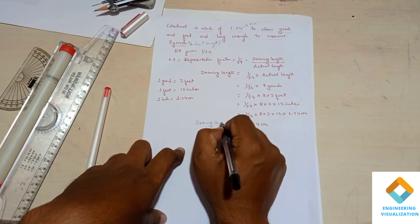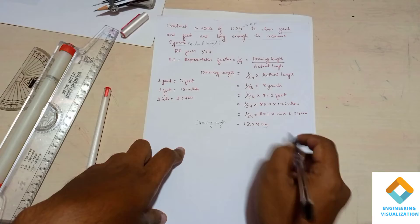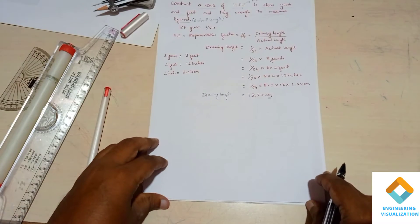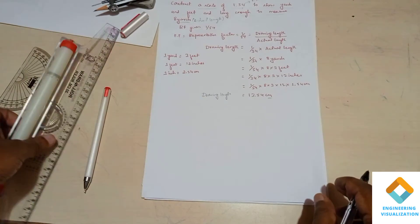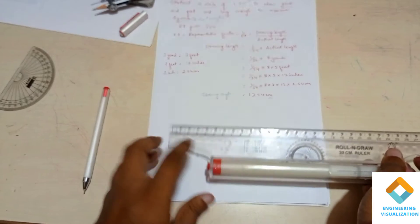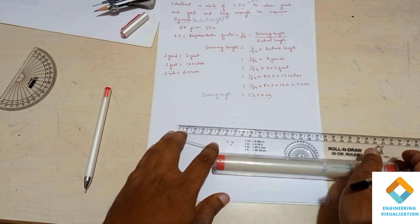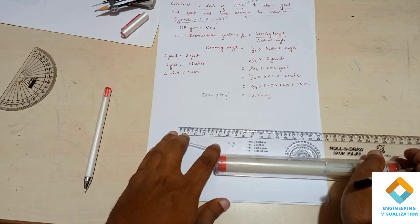In that scale we are going to show both yards and feet, and then we measure one example as a length. I'll use the scale and I'm going to measure this 13.54.